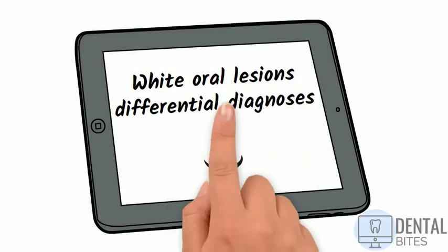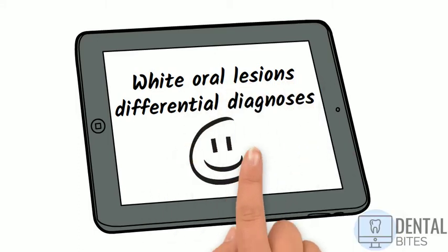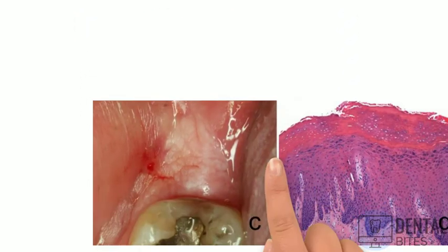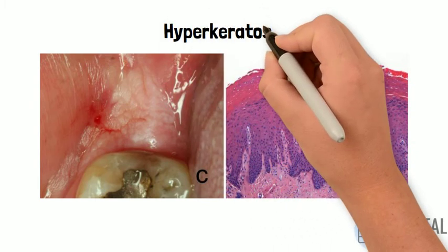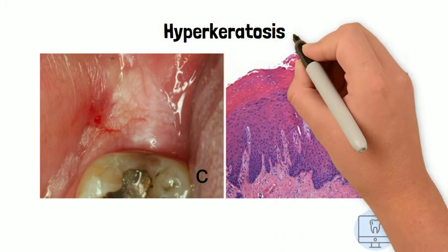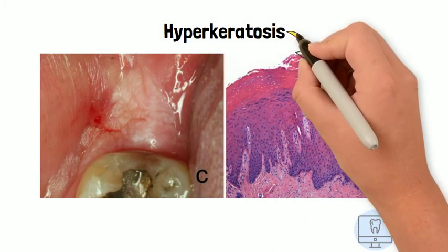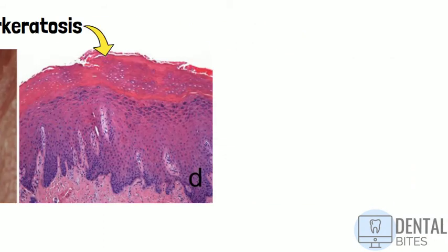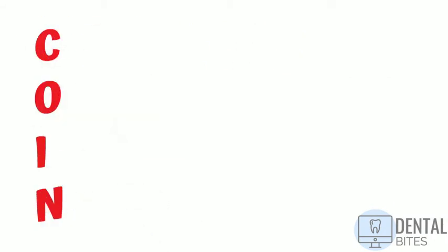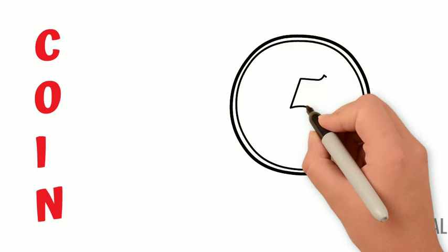Hi guys, welcome to the channel. In today's video we'll be talking through the differential diagnoses of white oral lesions. These are usually caused by a thickened keratin layer. We'll break down the types of white patches that can be seen in the mouth using the acronym COIN to help us remember them.